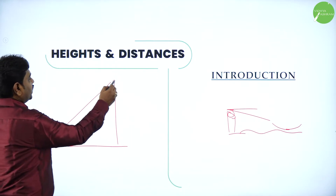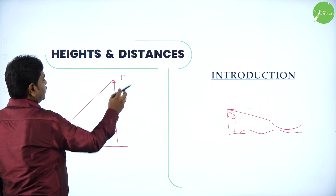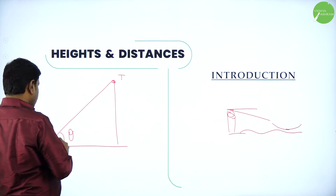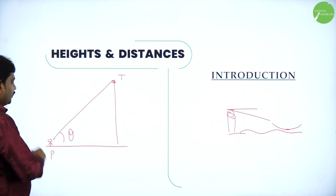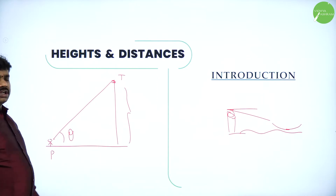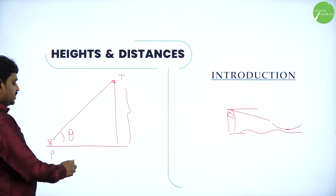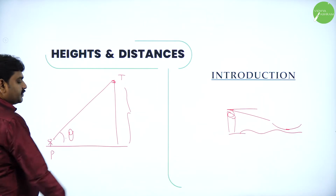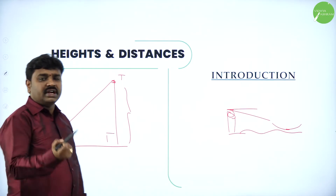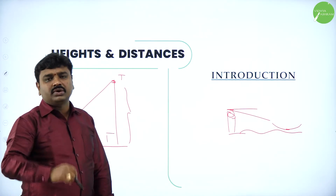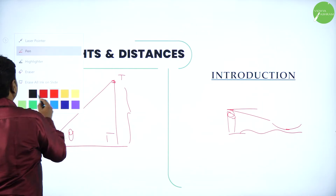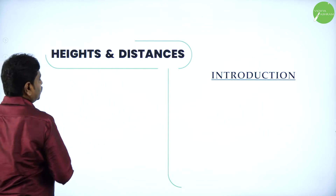Now I want to measure the height of a tower. This is the tower — I am standing here at point P and I want to know the height of this tower. It can be done by knowing this angle and this distance, because here you can see a right angle triangle. Once you know the right angle triangle, you can apply trigonometric functions.